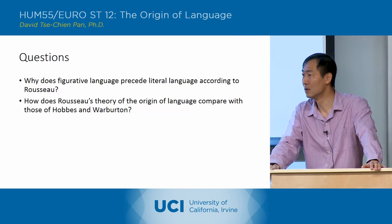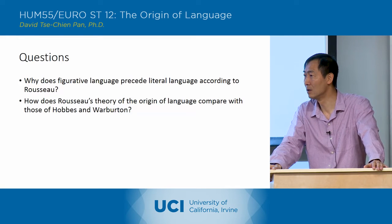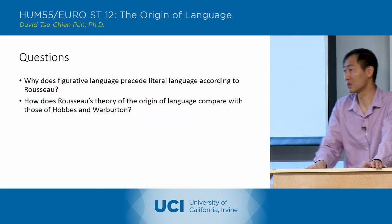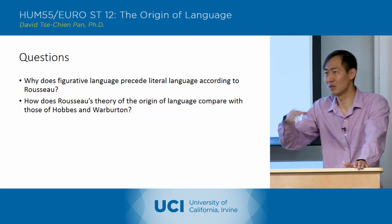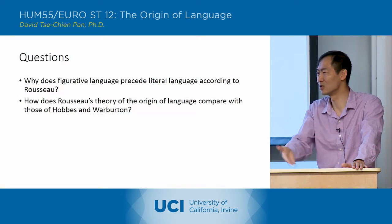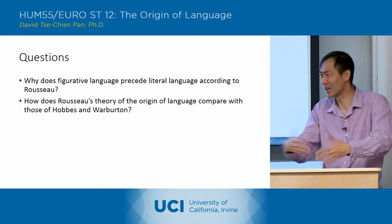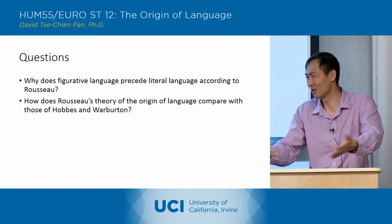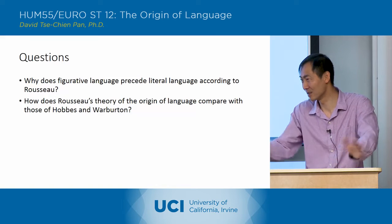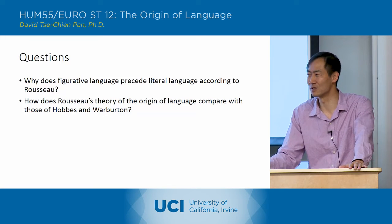So would you say that Rousseau thinks that literal language is kind of like a separation from the emotional side of processing? Yes, definitely. He talks about that. In fact, that's his example of the giant and the man. Once you've calmed down and can take a look at things soberly, then you come up with the correct definition.